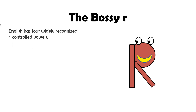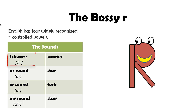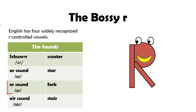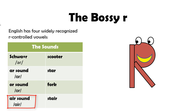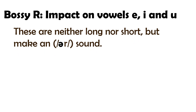English has four widely recognized R-controlled vowels: the schwa plus R sound, as in 'scooter'; the AR sound, as in the word 'star'; the OR sound, as in the word 'fork'; and the AIR sound, as in the word 'stare'. The impact of the Bossy R on the vowels E, I, and U — these are neither long nor short but make an R sound.